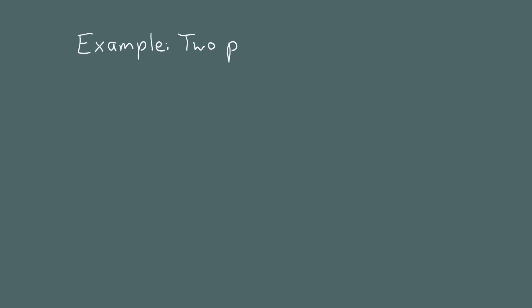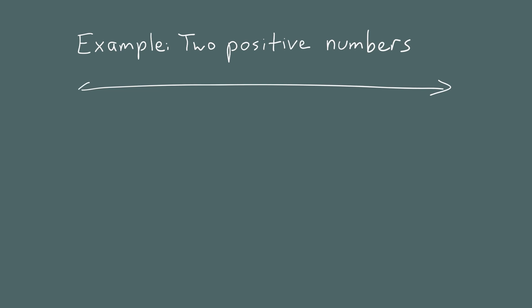To get started, let's compare two positive numbers. Let me draw a real number line with 0 here. The two numbers we're going to compare are 6 and 12. I'm going to draw a square around 6 and a circle around 12. I'll call whatever number is in the square A, and whatever number is in the circle B. So in this example, A is less than B, because 6 is less than 12, or 6 is to the left of 12.